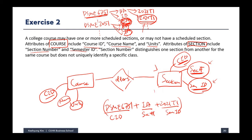Then we identify the cardinality. For each course, there can be many sections, including zero — if a course is designed but not currently offering any section, that's possible. From the section's perspective, if a section offering exists, there should be an existing course associated with it. The main point here is identifying the primary key of the section entity.